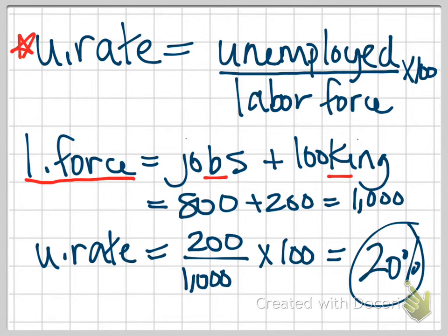So that's really high. The worst ours was, since we've tracked this, was 25% at the height of the Great Depression. So this would be a very, very high unemployment rate.